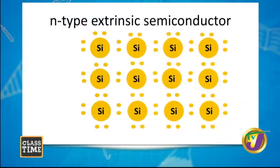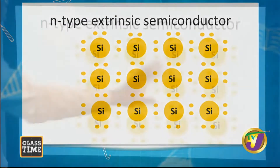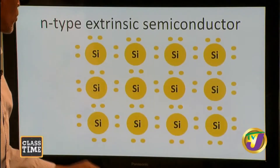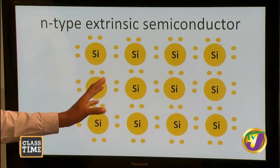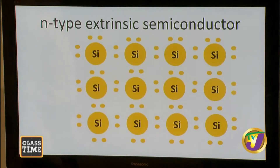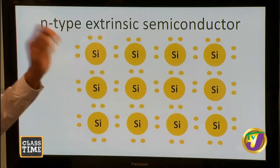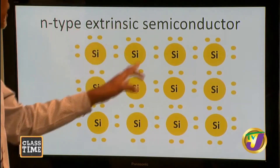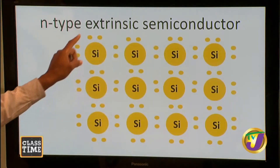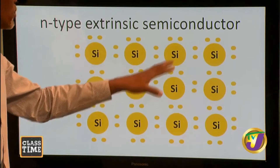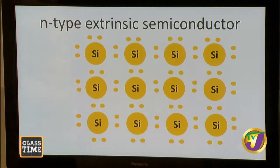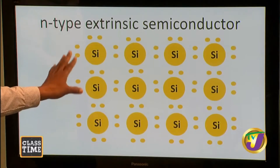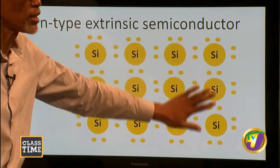Here we have an intrinsic semiconductor — this is silicon. Silicon has a square lattice structure, quite different from carbon which has a tetrahedral structure. It is cubical in nature, though this is shown in one dimension. These are the valence electrons — each silicon has four valence electrons. In that outermost shell, it can accommodate up to eight electrons, so they form covalent bonds: when they share the electrons, each one completes the shell with its eight electrons. So we have that kind of a lattice structure, and this is an intrinsic semiconductor because it has one type of atom.